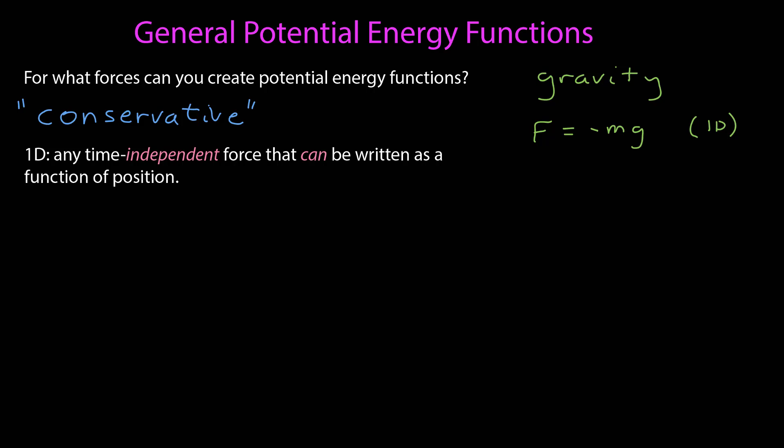So let's play with some other model functions of this type that might satisfy this condition. The easiest one to think of, beyond just a constant function, would be a force proportional to x, proportional to position. I have a force that as you go along the x-axis gets larger and larger in the positive direction. It's defined over all positions and it's time-independent, so we can find a potential energy function for this force. The potential energy function is the negative antiderivative of the force, so the negative antiderivative of alpha times x is just negative one-half alpha x squared, plus an additive constant.